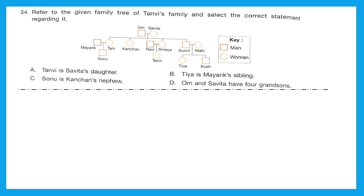Question 34: refer to the given family tree of Tanvi's family and select the correct statement. Squares mean men and circles mean women; there are three generations — grandparents, parents, and children. Option A: Tanvi is Savita's daughter — let's locate Tanvi; she is under Ravi and Shreya, so Tanvi is not Savita's daughter. This is incorrect. Option B: Tia is Mayang's sibling — Tia is under Sumit and Mahi, and Tia's sibling is Kush, not Mayang. Also incorrect.